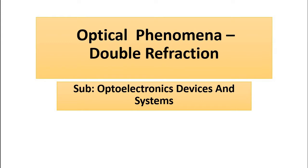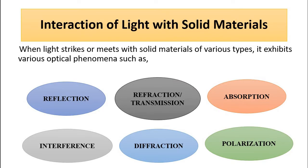First is double refraction. As we are discussing various optical phenomena — which is basically the interaction of light with solid materials — light travels from source to destination carrying data or information through multiple total internal reflections in optical fibers. But not just internal reflection happens; a combination of other phenomena also happens, which we will discuss in detail.